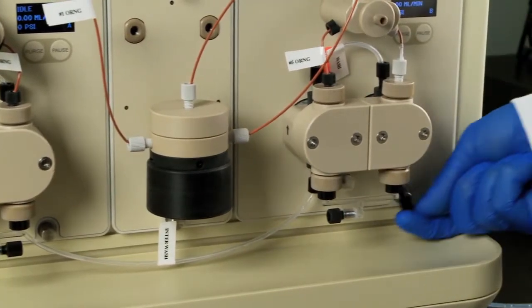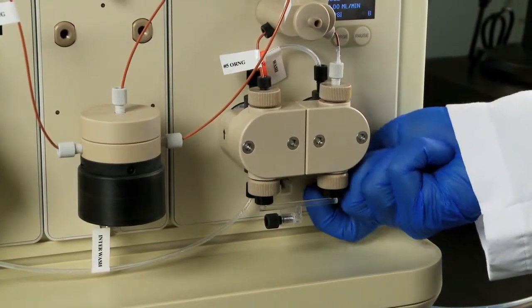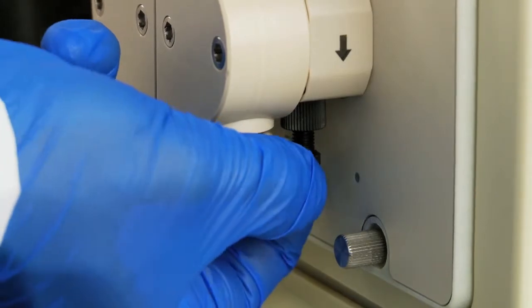Next, attach the pump wash priming line to the System Pump B wash outlet, right-most bottom port.